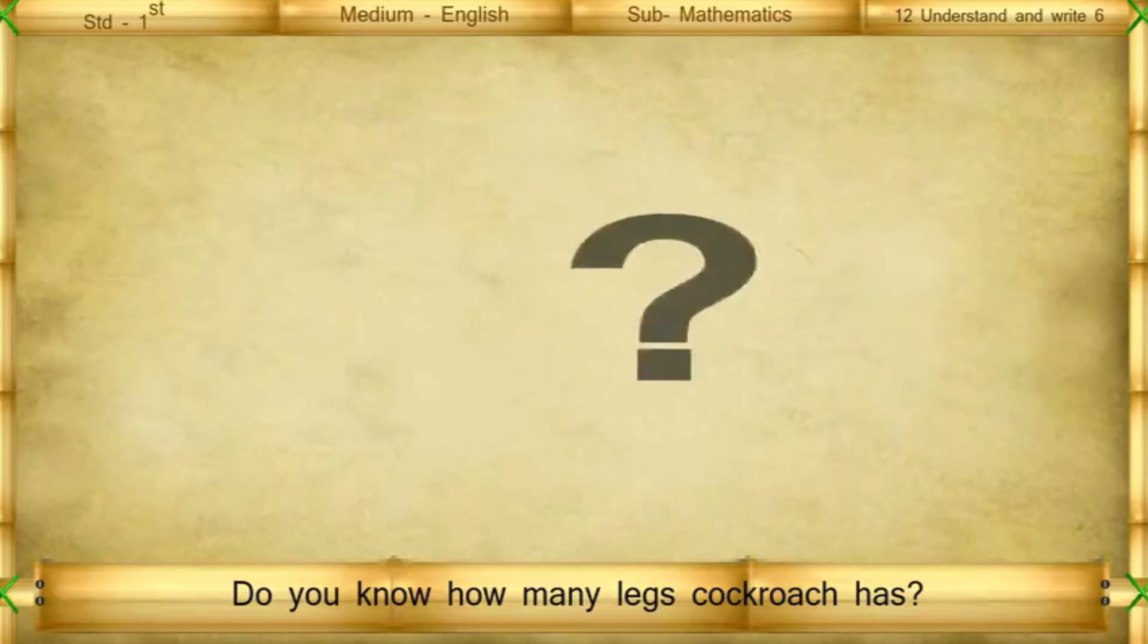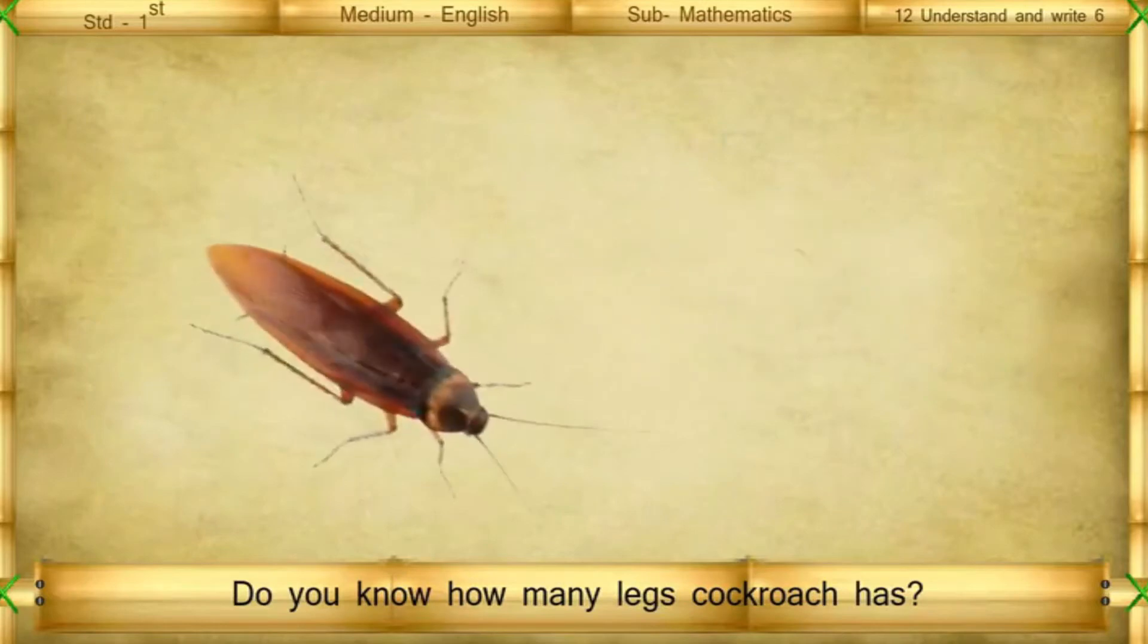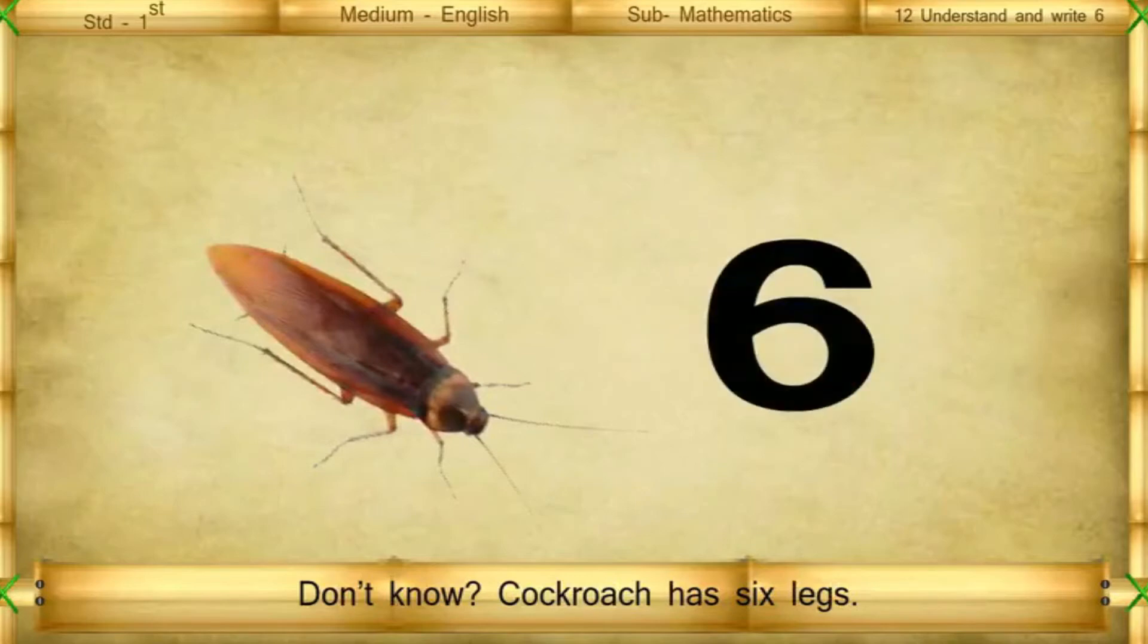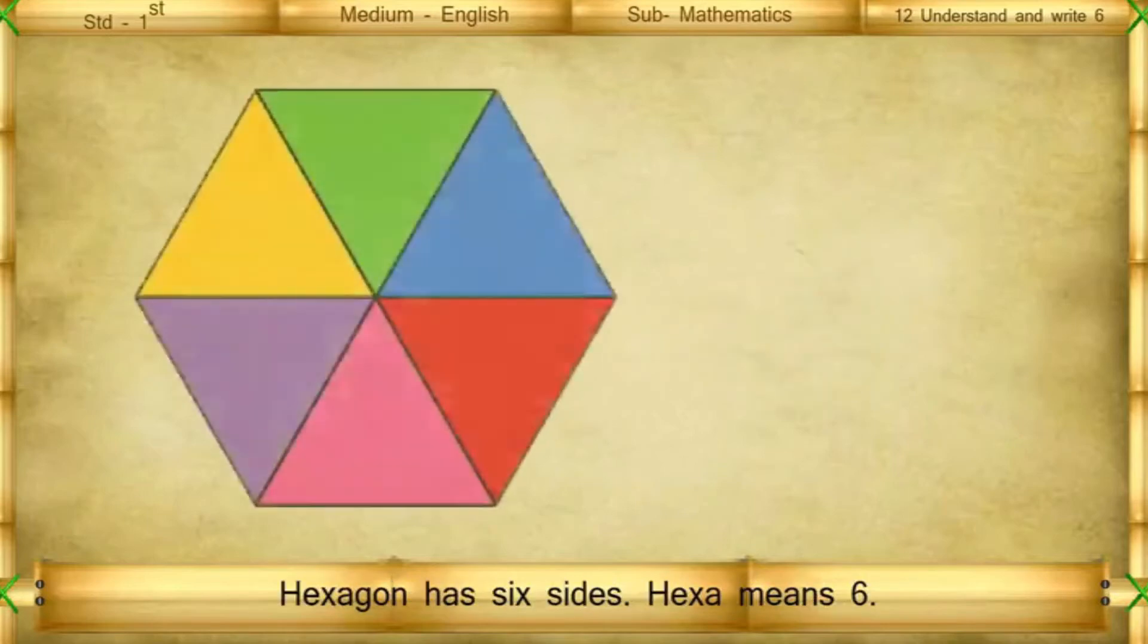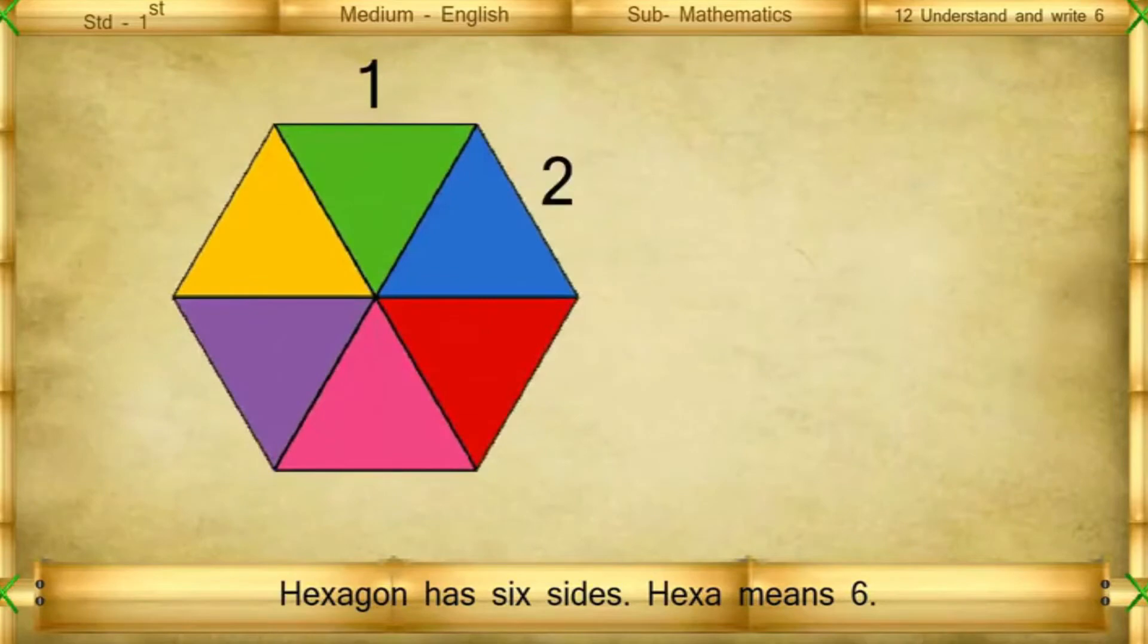Do you know how many legs a cockroach has? Don't know. A cockroach has 6 legs. A hexagon has 6 sides. Hexa means 6.